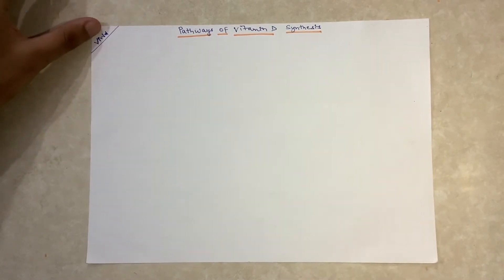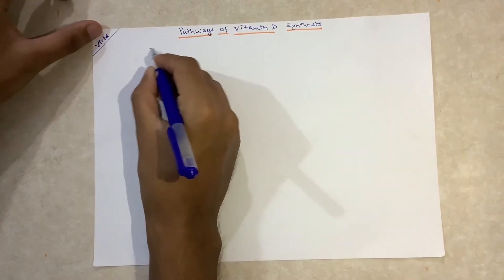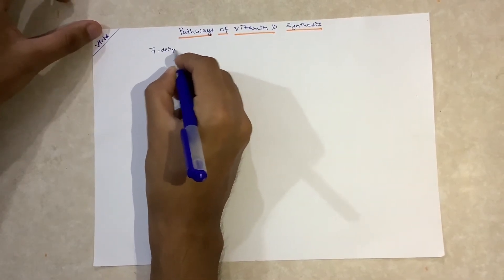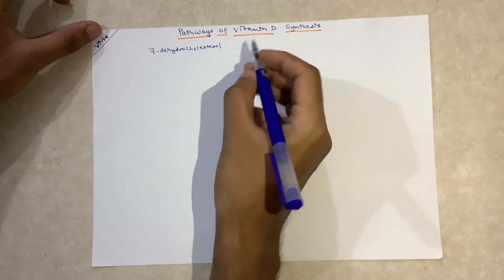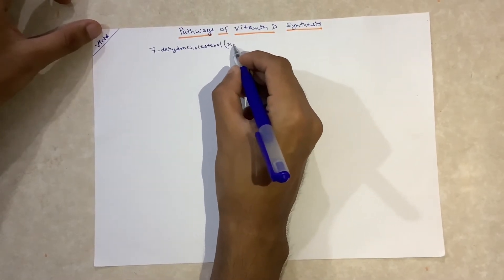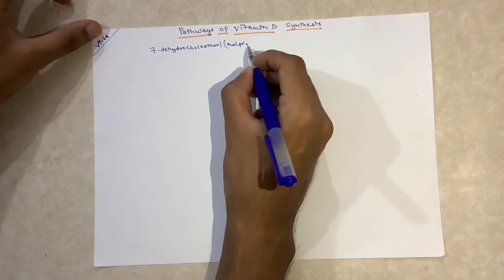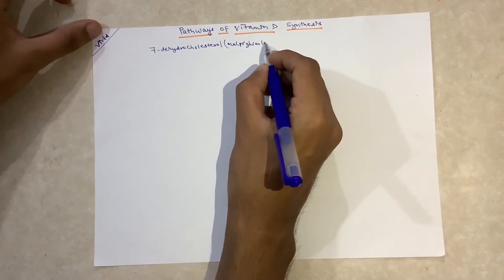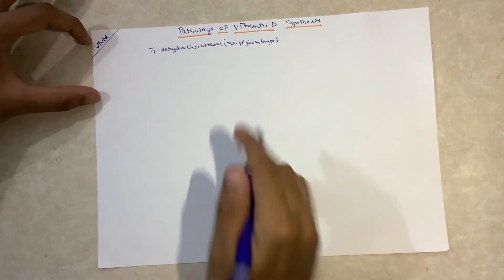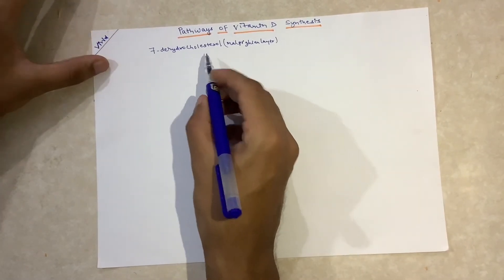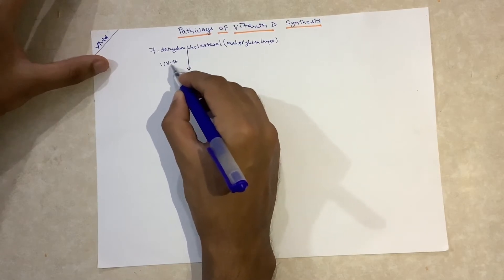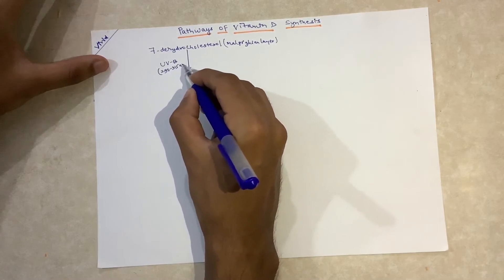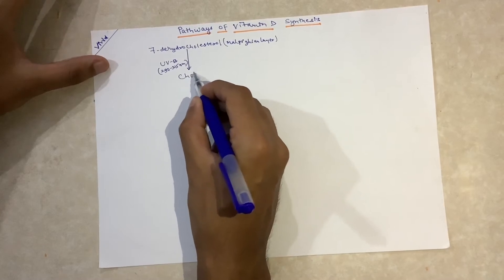The pathway of vitamin D synthesis starts from 7-dehydrocholesterol that is present in the Malpighian layer of epidermis. When 7-dehydrocholesterol is exposed to UVB rays, that is ultraviolet B rays with wavelength 290 to 315 nanometers, it gets converted into cholecalciferol.